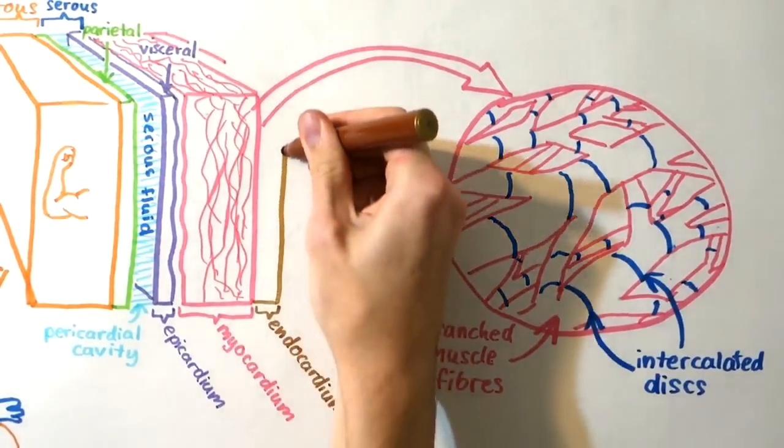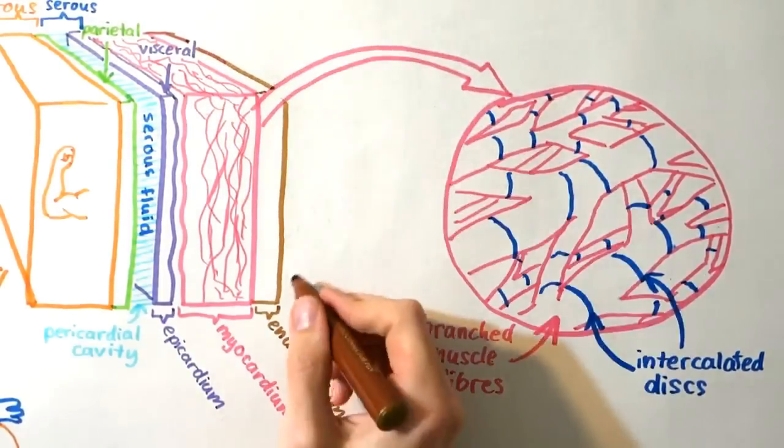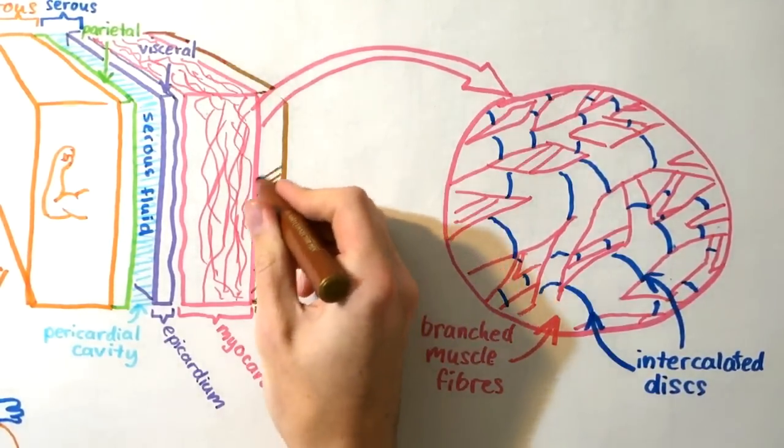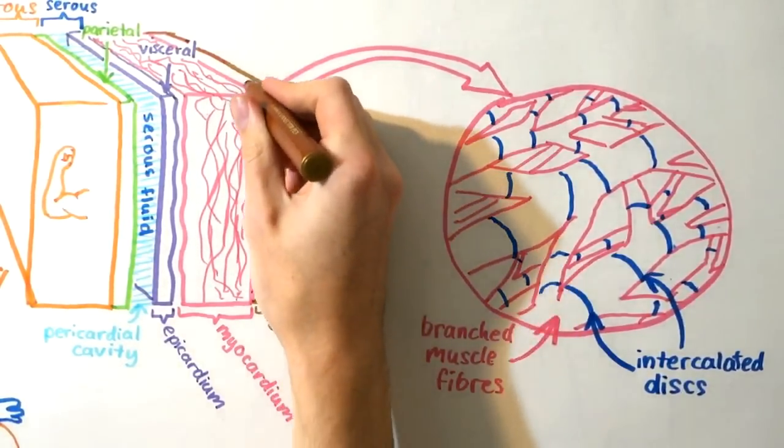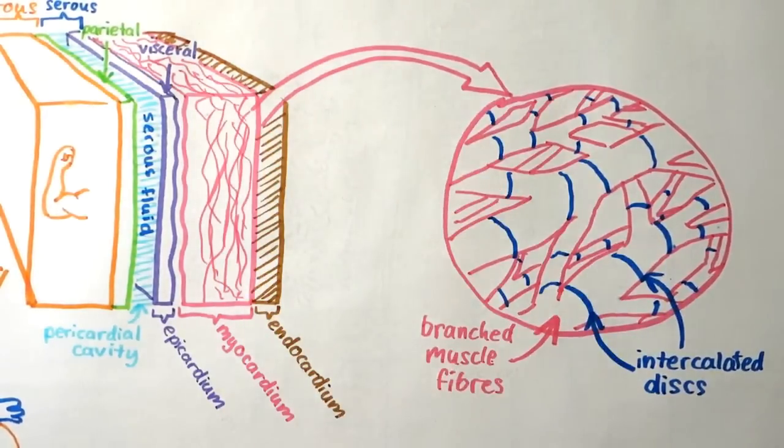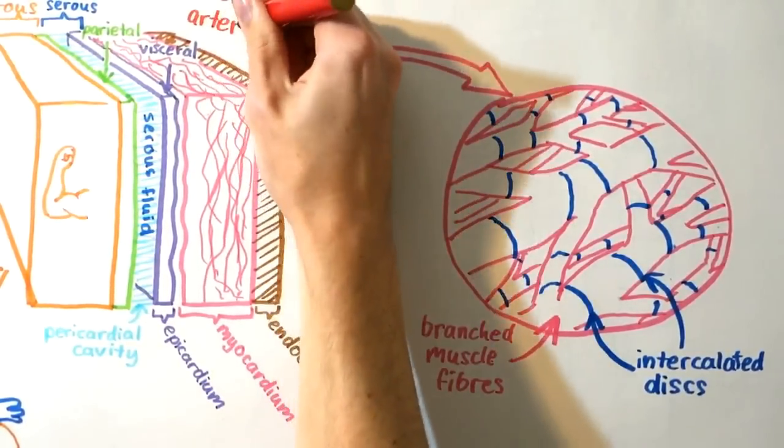The endocardium is the thin innermost layer of the heart. It is comprised primarily of endothelial cells. Its function is similar to the endothelium of blood vessels, as they need to provide a smooth, non-adhering surface for good blood flow. The endocardium also helps to regulate the composition of the fluid surrounding the muscle cells to affect their performance. Coronary arteries are responsible for supplying blood to the tissues of the heart.